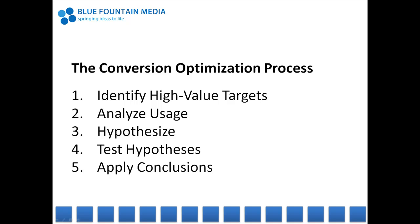First, find what pages you should start optimizing. Then, analyze how users are interacting with those pages. Based on your analysis, come up with a few ideas on what may be wrong with those pages. Conduct a test to see if your proposed solution works. And finally, apply what you learned from testing to your website. The tools that I'm presenting will help you with three of these steps. Let's get started.